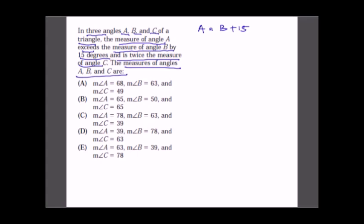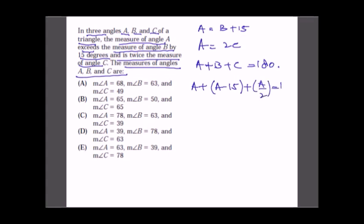We also know A = 2C, so C = A/2. Using A + B + C = 180, we substitute: A + (A − 15) + (A/2) = 180, which gives 5A/2 = 195, so A = 78.